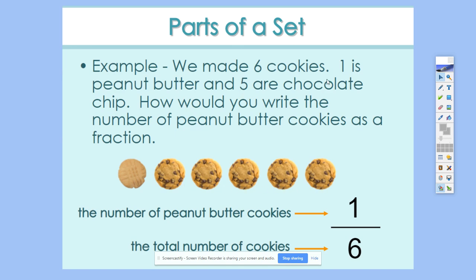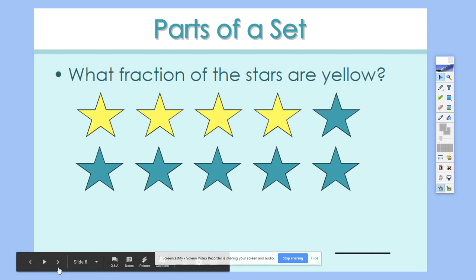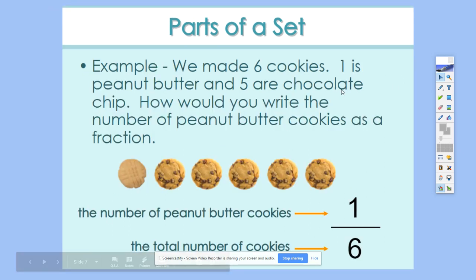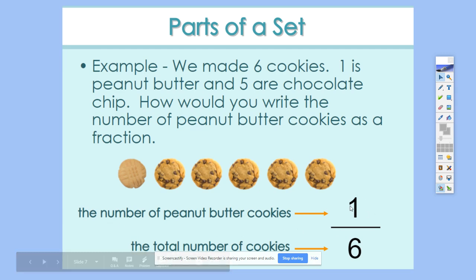I know that one of those cookies is peanut butter, and the other five are chocolate chip. We would write this as the number of peanut butter cookies. So we have one out of six cookies. So one out of six is peanut butter.